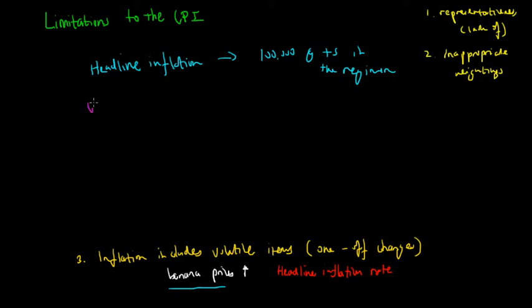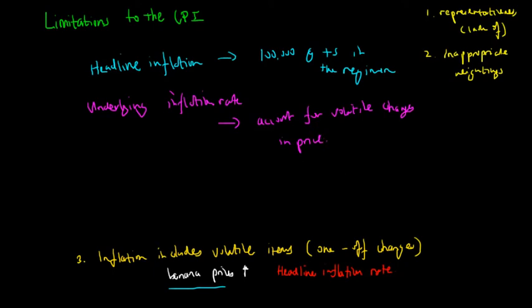What they also have is the underlying inflation rate. This is more representative of underlying economic circumstances. What this means is that they get rid of or account for volatile changes in price. So they don't include banana prices in the calculation of inflation.